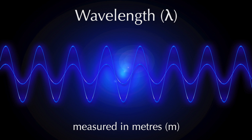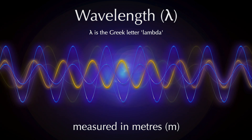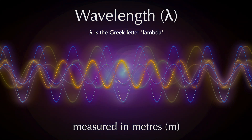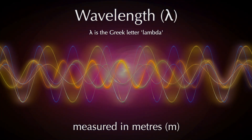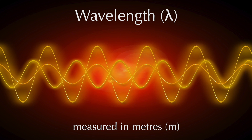Wavelength, measured in metres, is a strange property to apply to light, but light itself is a strange thing, and it can be accurately described like a wave. Right now, we don't need to worry about what the wavelength actually means. We just need to know that it's linked to both speed and frequency.